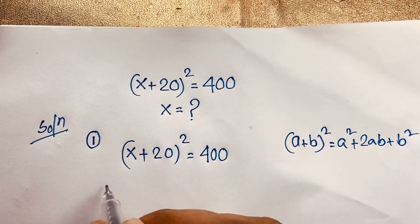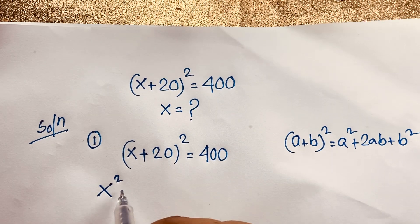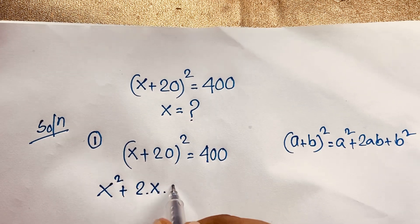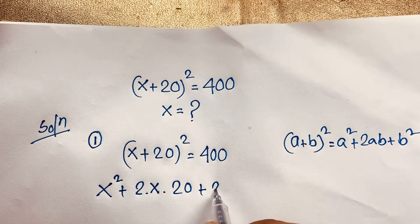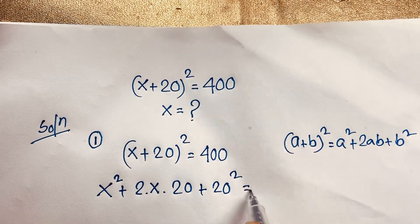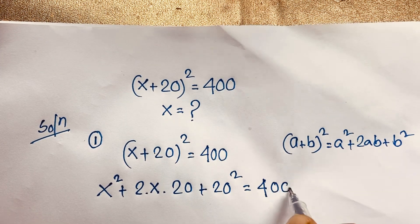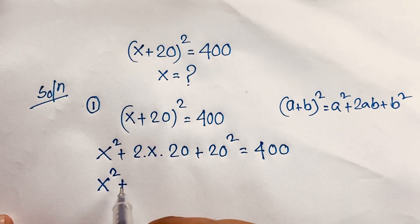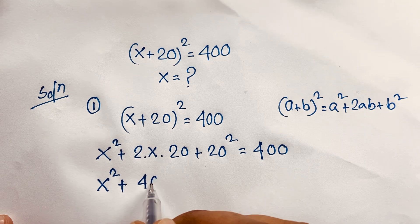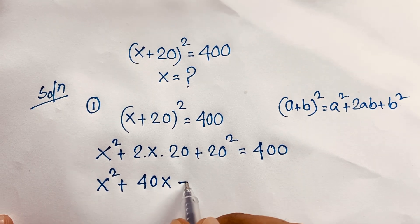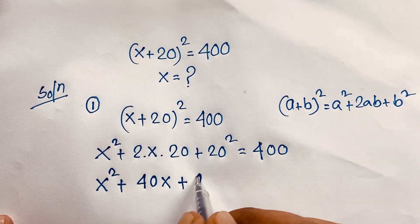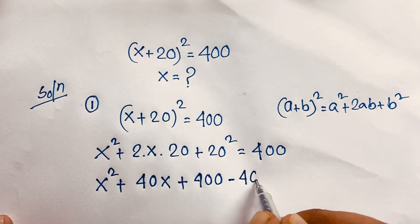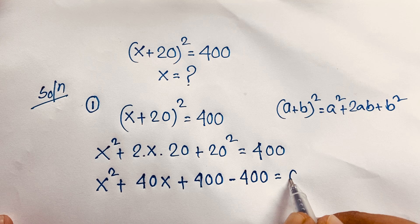I'm going to apply this formula. It will be x² + 2ab where a is x and b is 20, so plus 40x, plus b² which is 20² = 400. Now you can see it becomes x² + 40x + 400 = 400. If I move the 400 to this side, it will be negative 400, giving zero on the right.